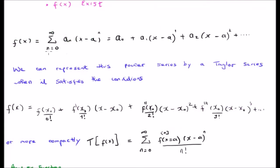Let's look at the power series of the form: sum from n equals 0 to infinity of a coefficient a_n times (x minus a)^n, where a is some constant used to shift the function along the axis. So this is a_0 plus a_1(x minus a) and so on. We can represent this particular power series by what's known as a Taylor series when it satisfies the conditions mentioned above, basically when the function is analytic.